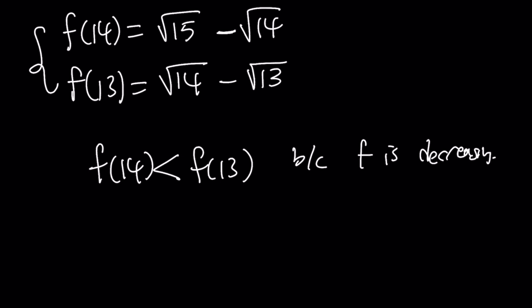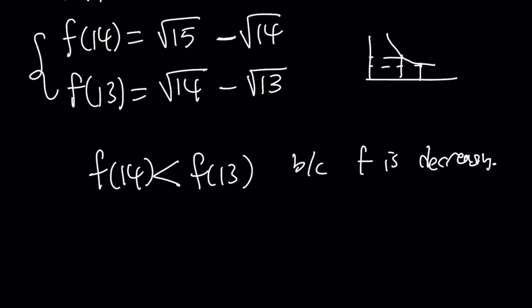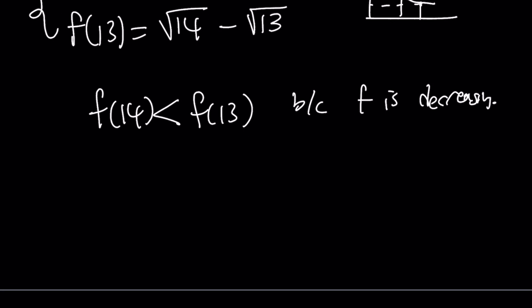When you have a decreasing function, as x values increase you get smaller y values. So f of 14 is less than f of 13. Before we write the final inequality, let's consider one more thing. We said f of 0 equals 1, and now I want to look at the limit of this function as x approaches infinity.